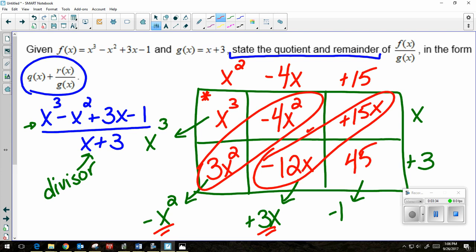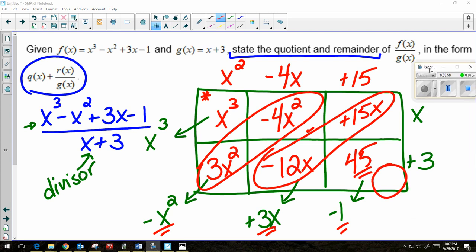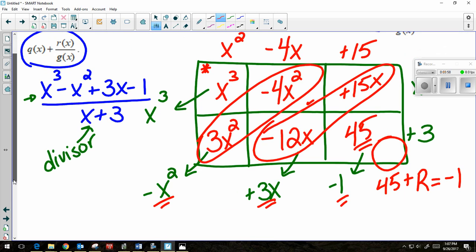So here's how I know that there is a remainder. Obviously I did from the question, but if I didn't have that wording in the question and it just said to divide, the fact that my 45 does not match the outcome of this diagonal tells me there's a remainder. So I like to set up this little equation. 45 plus my remainder is supposed to give me -1. So now you can solve. Subtract 45 on both sides. That means my remainder is -46.